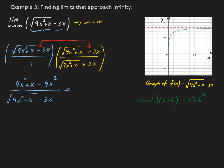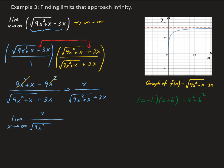Simplifying this, the 9x squared terms cancel out, so we're left with x in the numerator. In the denominator, we have the square root of 9x squared plus x plus 3x. So now we take the limit of x divided by the square root of 9x squared plus x plus 3x as x approaches infinity.